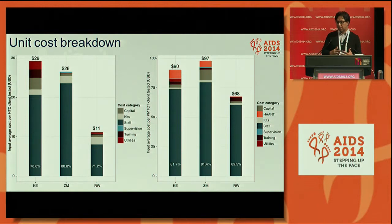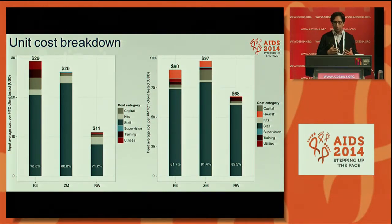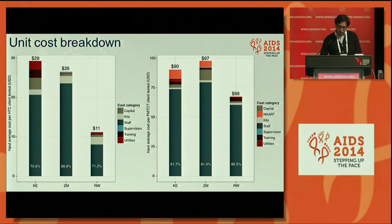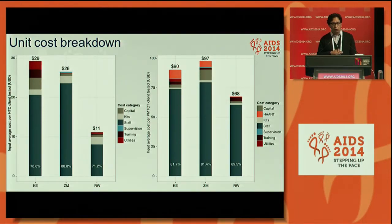First, we estimated the average cost. On one side is HTC and on the other PMTCT. This is the average cost per service at the first stage of the cascade — average cost per person tested — each bar representing one country. For HTC it is between $11 and $29, and for PMTCT between $68 and $97. In both cases, staff is the main cost component, representing around 70–90% in all countries — these are very labor-intensive services.